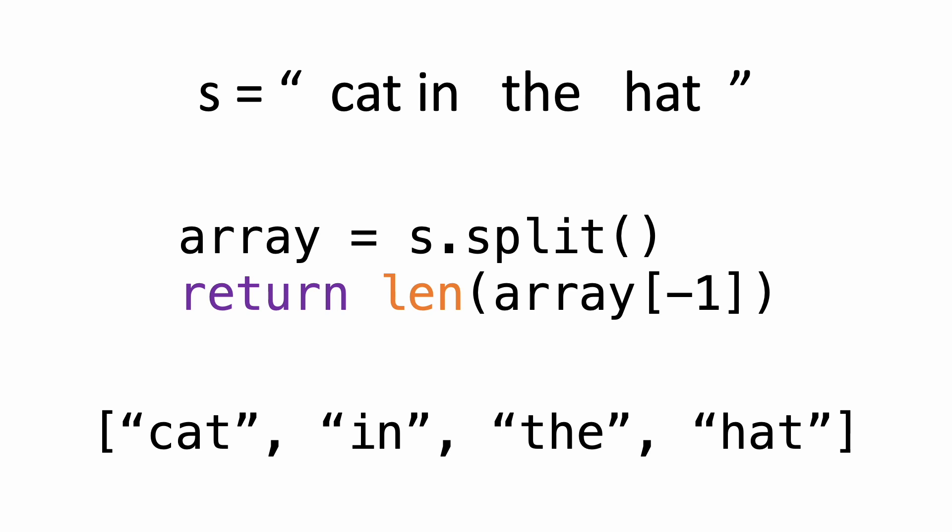We can then just return the length of the last element in the array. In Python, you can access the last element by using an index of negative one. So the last element in this array is the word hat, so we would return three.